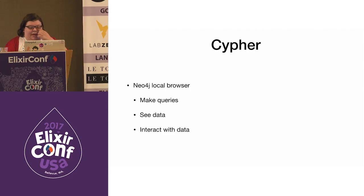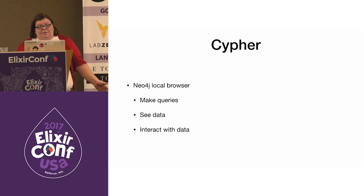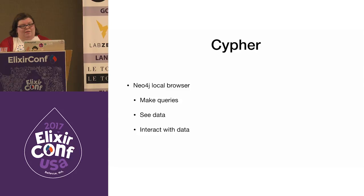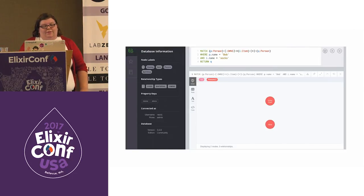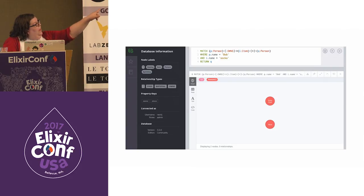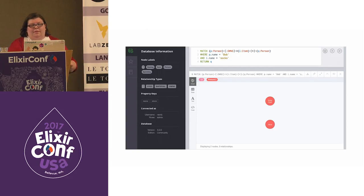Neo4j installs with a browser that you can use to make queries, visualize your data, and interact with your data. One word of caution: if you make new nodes and relationships in the browser, it's going to populate your actual database and — in my case — make all your tests fail. So make sure you clean anything out that you add in the browser. It's a pretty slick little tool, similar to pgAdmin.